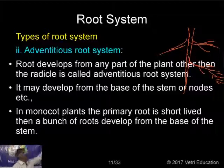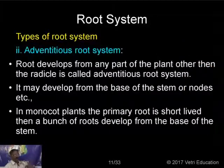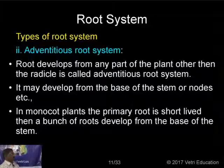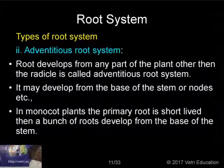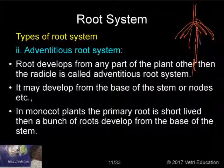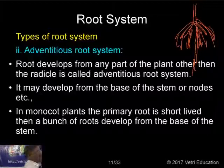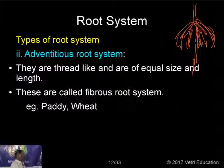The adventitious root system is a root system that develops other than from the radicle — it may develop from the stem or from a branch. A root that develops from any part of the plant other than the radicle is called an adventitious root system. It may develop from the base of the stem or nodes. In monocot plants, the primary root is short-lived — it develops from the radicle but dies very quickly. A bunch of roots then develops from the lowermost node of the stem, and they look like fiber. This is called a fibrous root system, found in paddy and wheat.